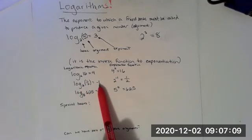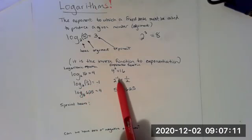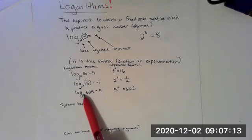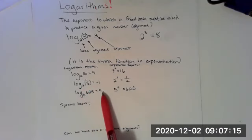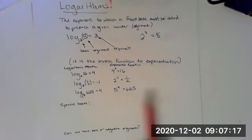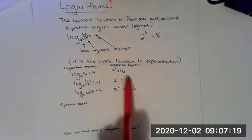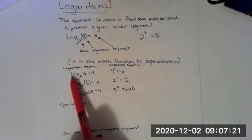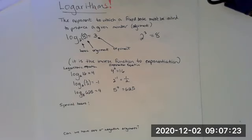Log base two of one half equals negative one. Two to the negative one equals one half. Log base five of 625 equals four. Five to the fourth is 625. So this is kind of just the visualization of a logarithmic equation compared to an exponential equation.